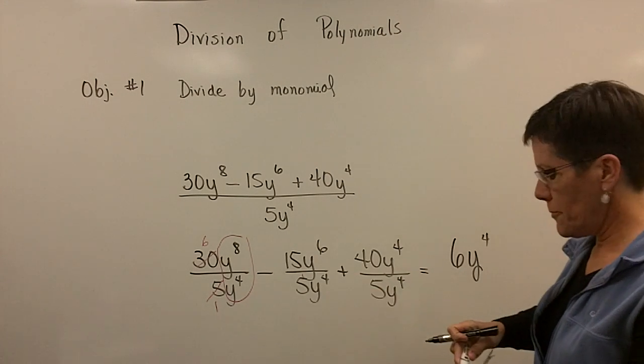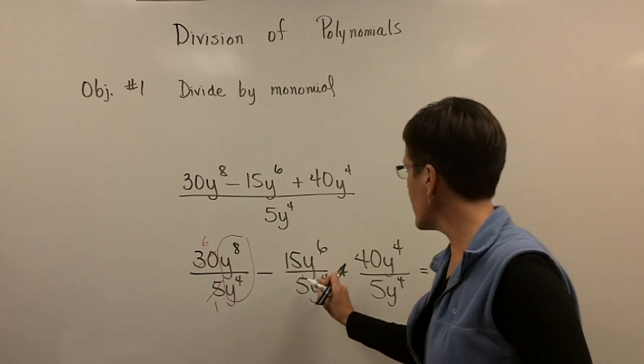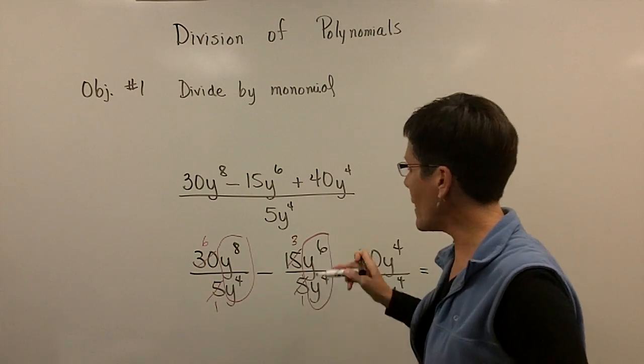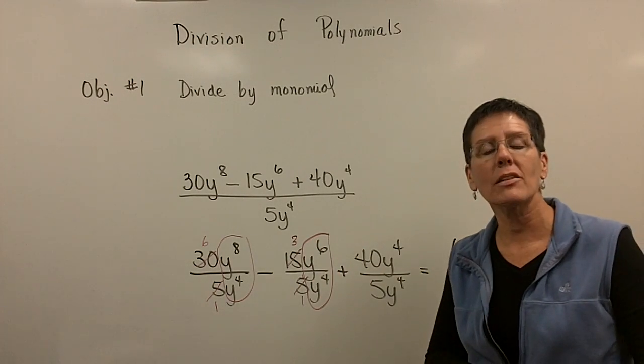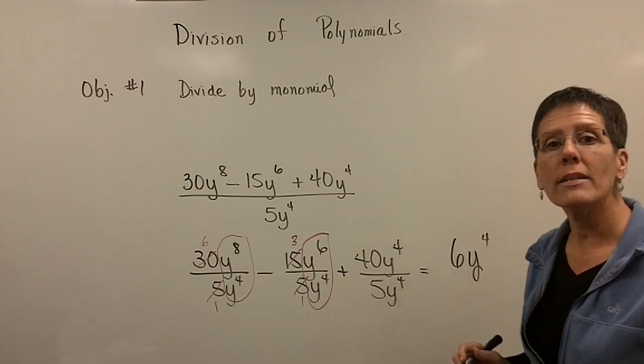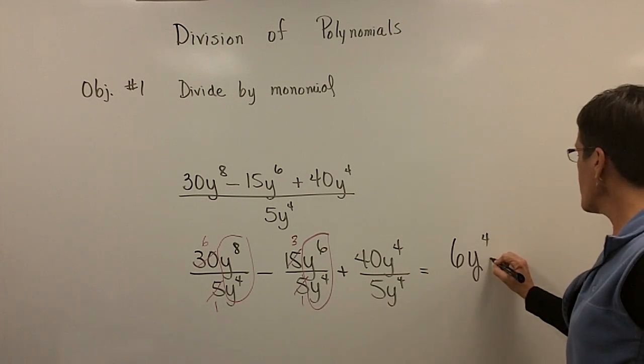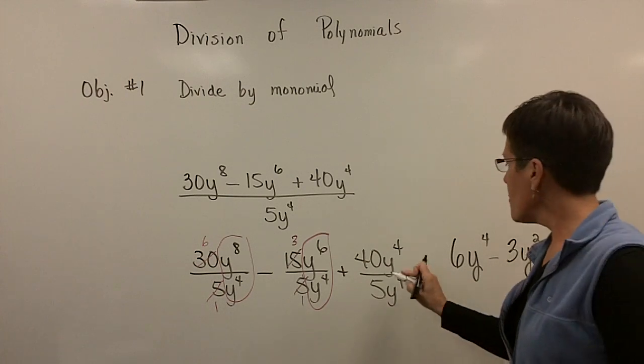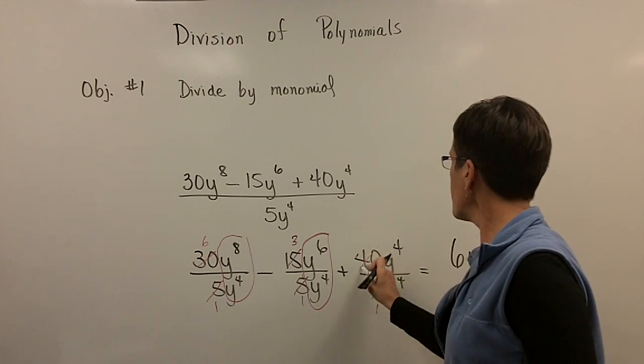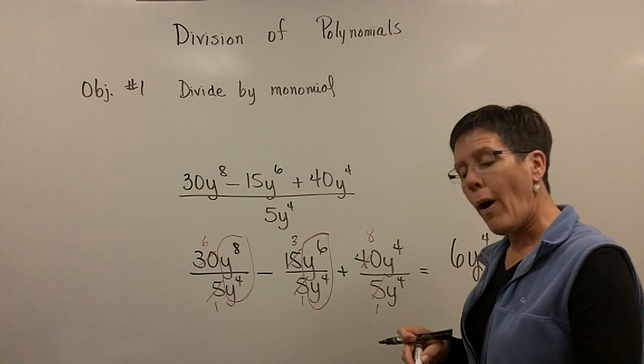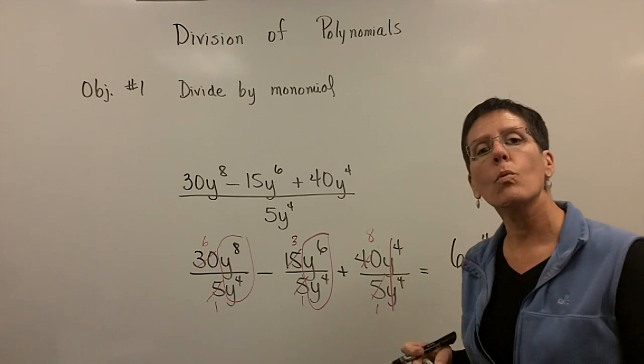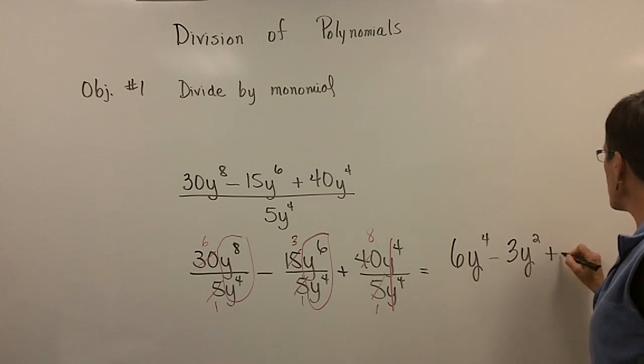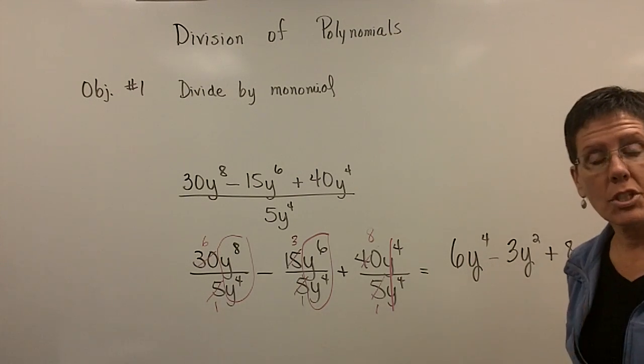And then five goes into fifteen three times. Don't forget the minus sign right there. And because those bases are alike, I'm going to subtract their exponents when I divide, so I'll have y squared. The coefficient will be three, then y squared. And then finally, five goes into forty eight times. But y^4 over y^4 equals one, so I'm going to finish that with eight times one, which is just eight. We're all done. We have divided a polynomial by a monomial.